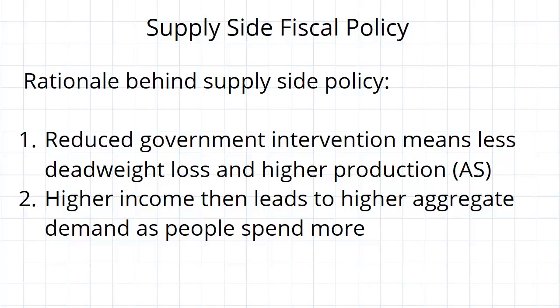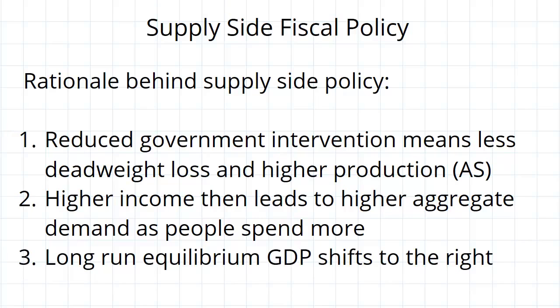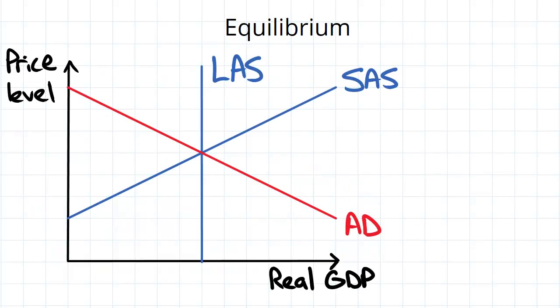Because there is higher income from the higher production, this will naturally lead to higher aggregate demand as well, because people are making more money so they go out and consume more. From these occurring, we get a shift in long-run equilibrium GDP to the right. So let's just have a look at that — let's say that initially we are here.